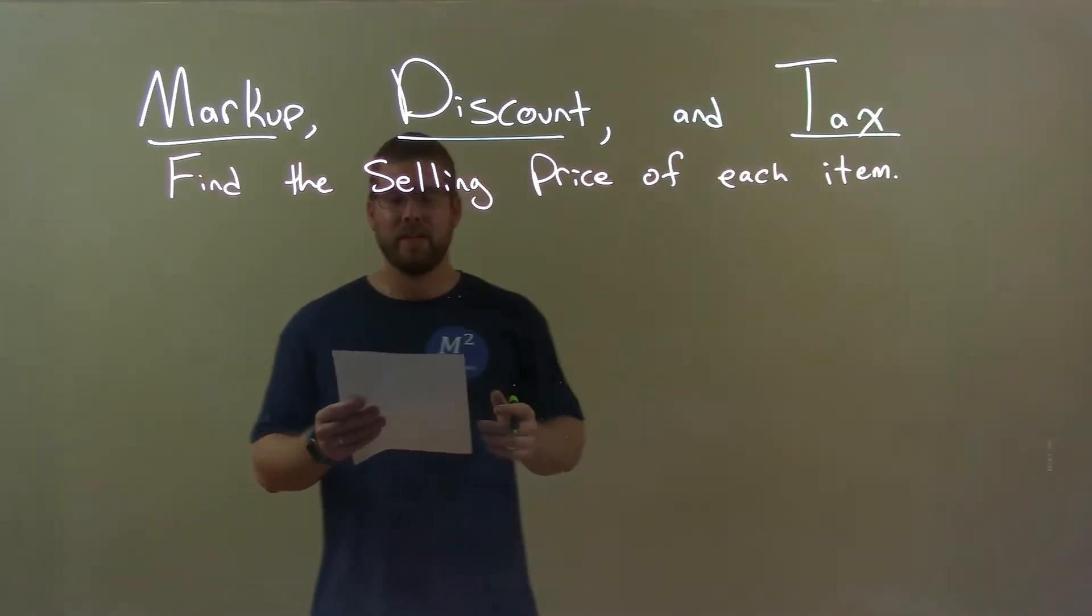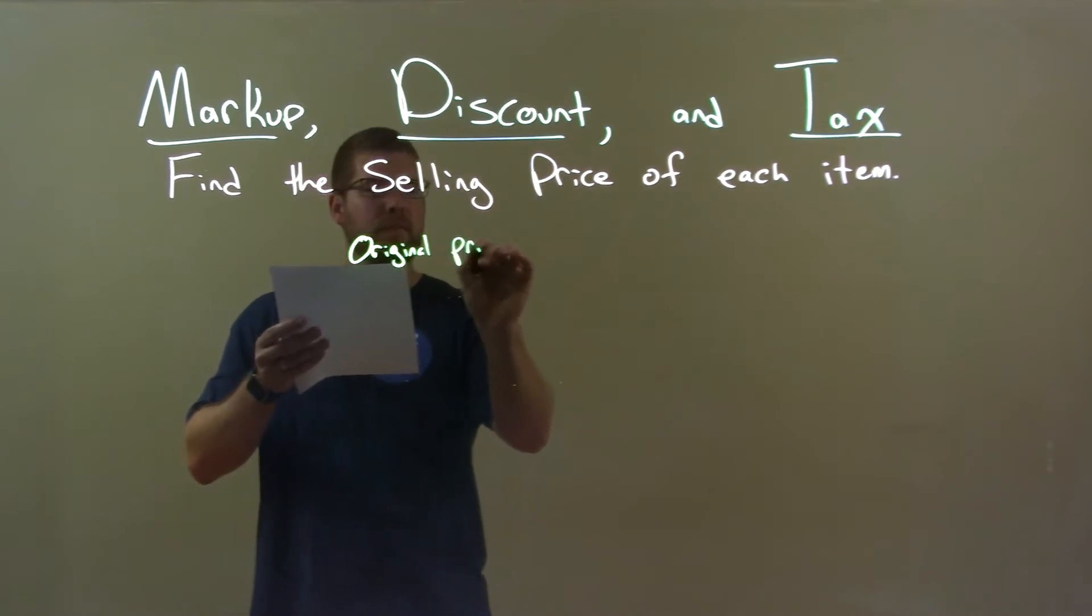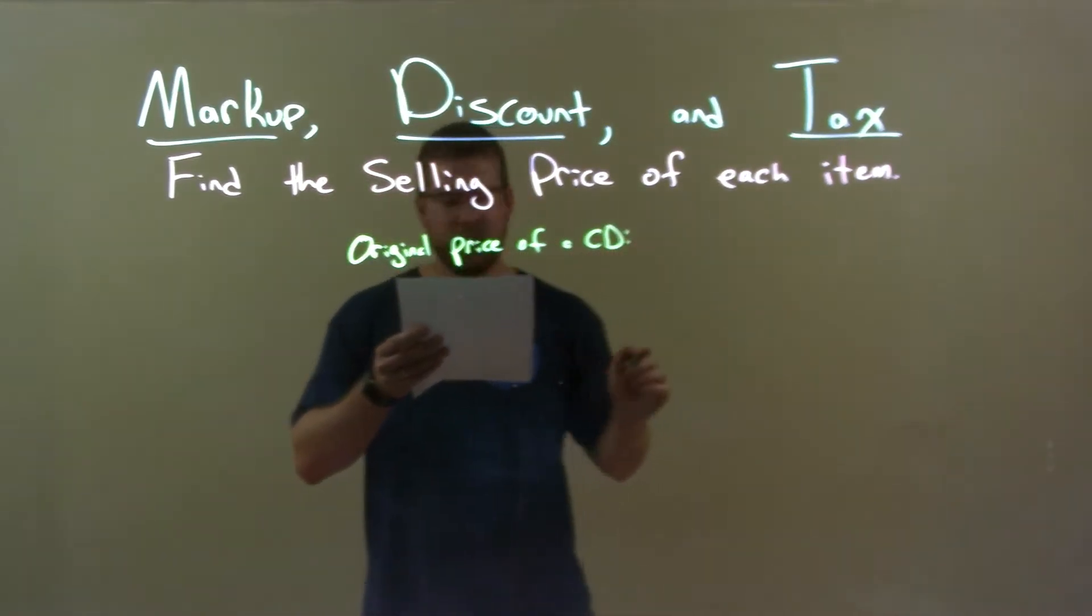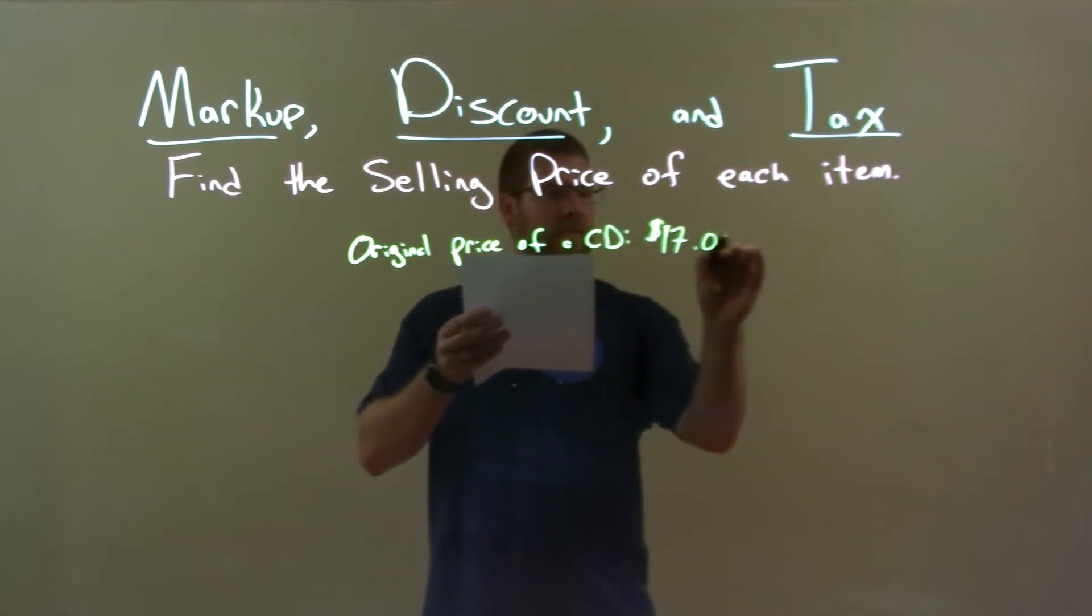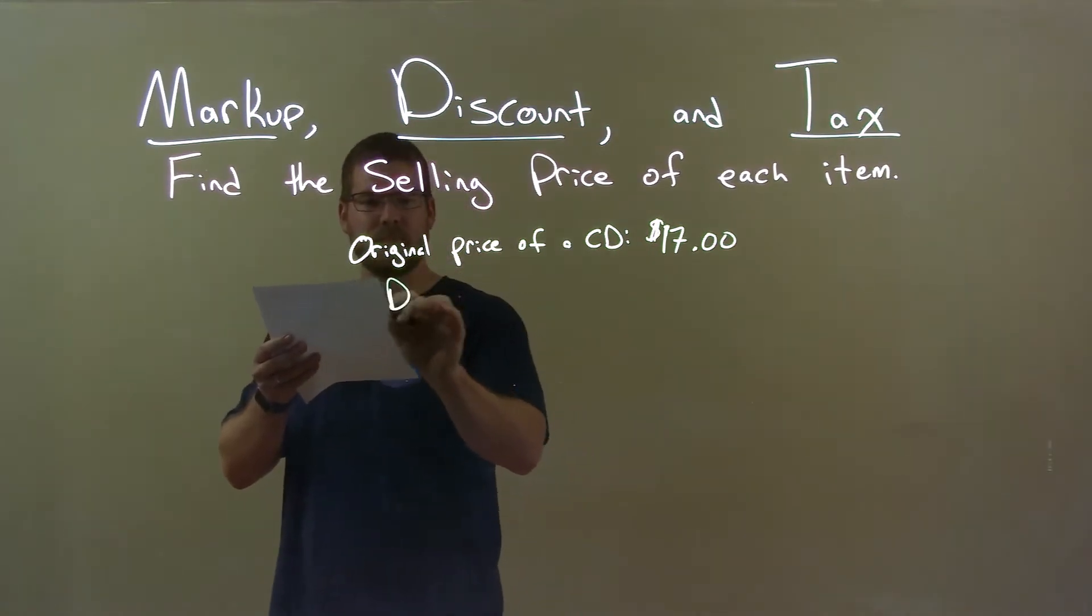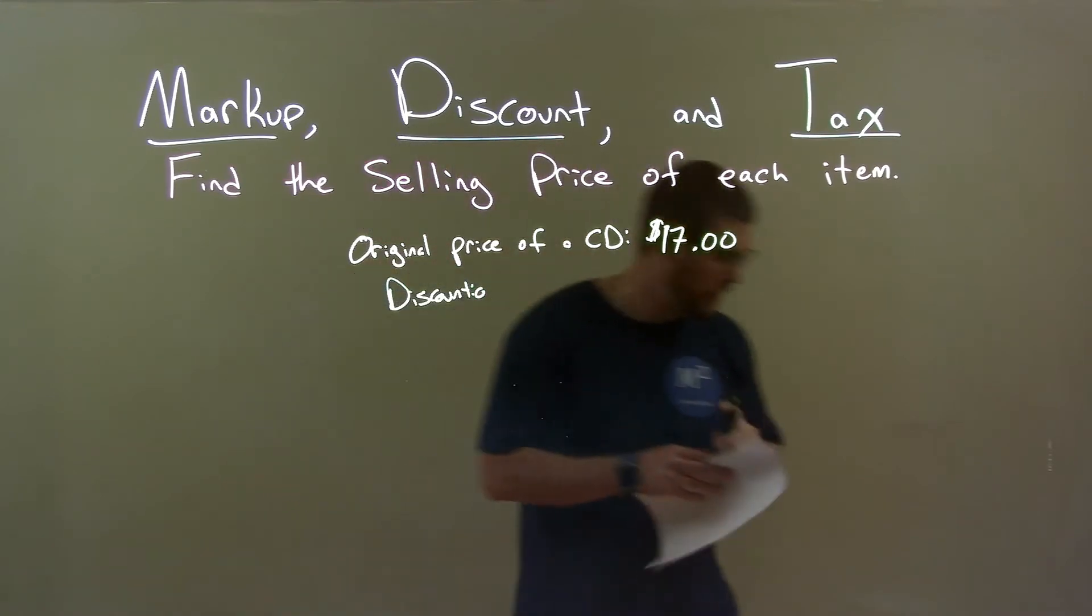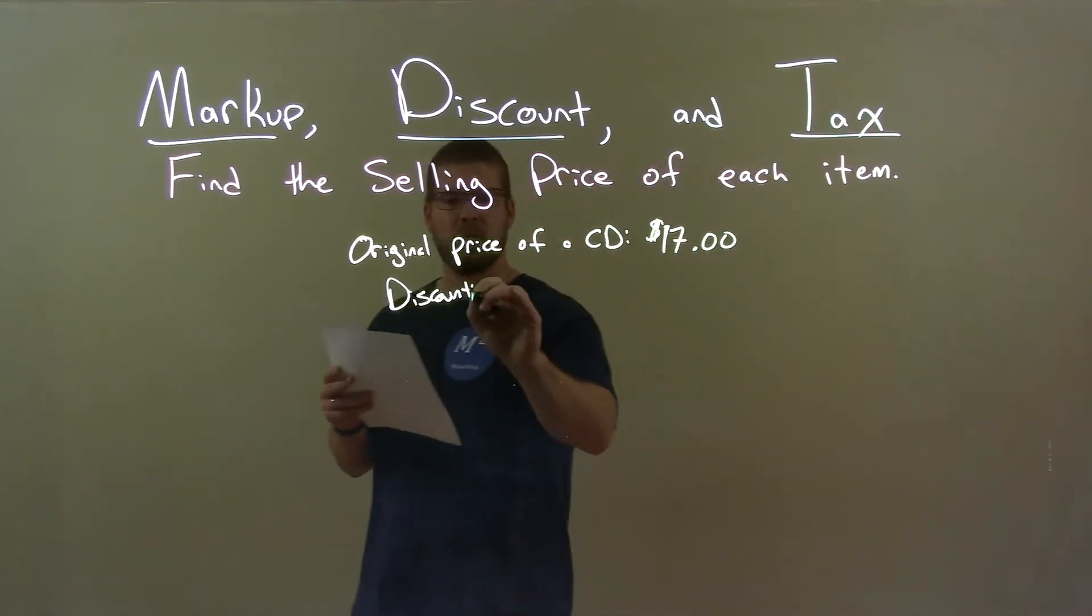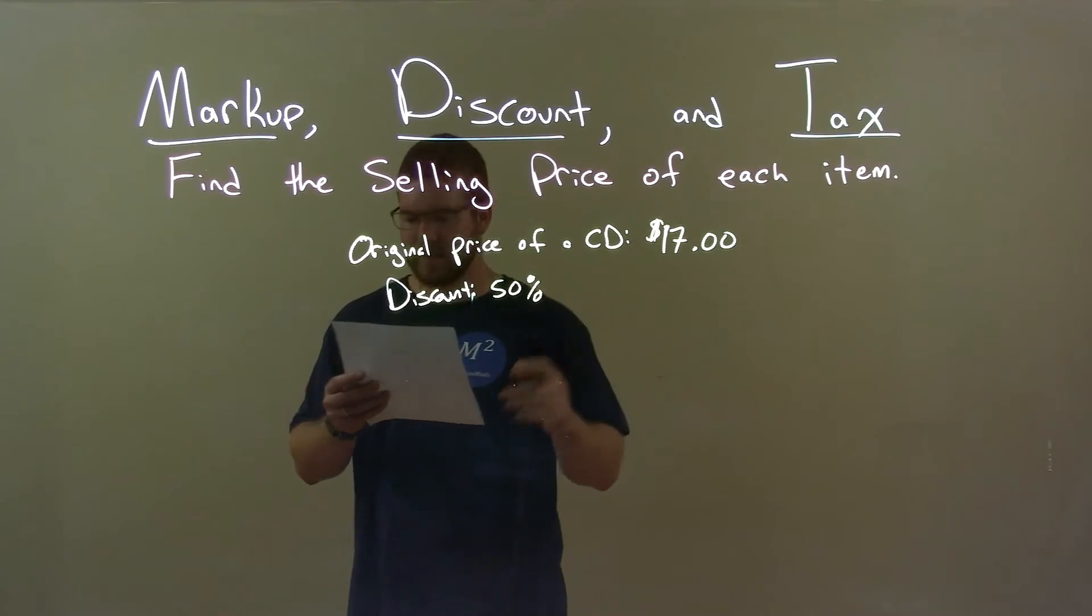So if I was given this item, the original price of a CD is $17 exactly. We're given a discount of 50%.